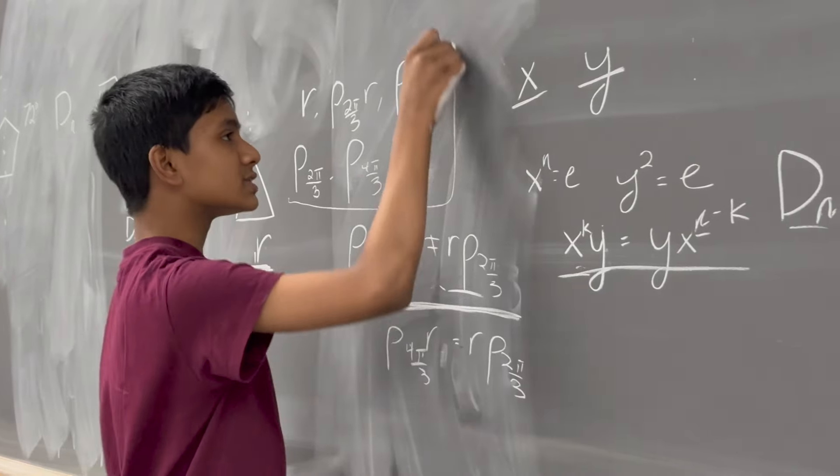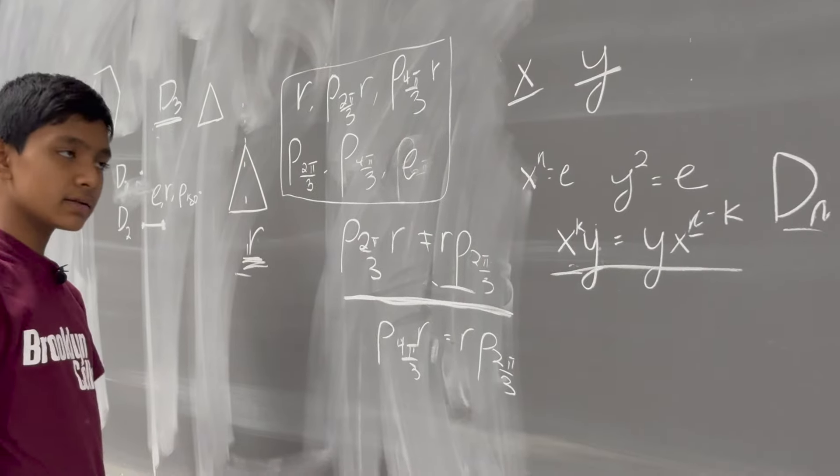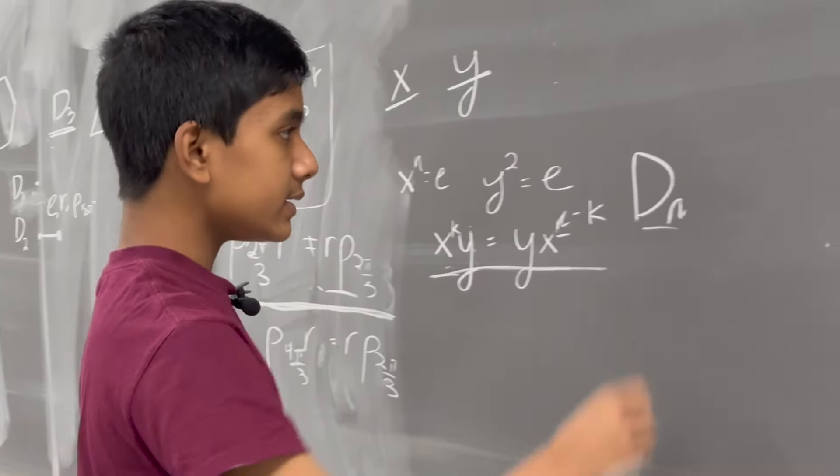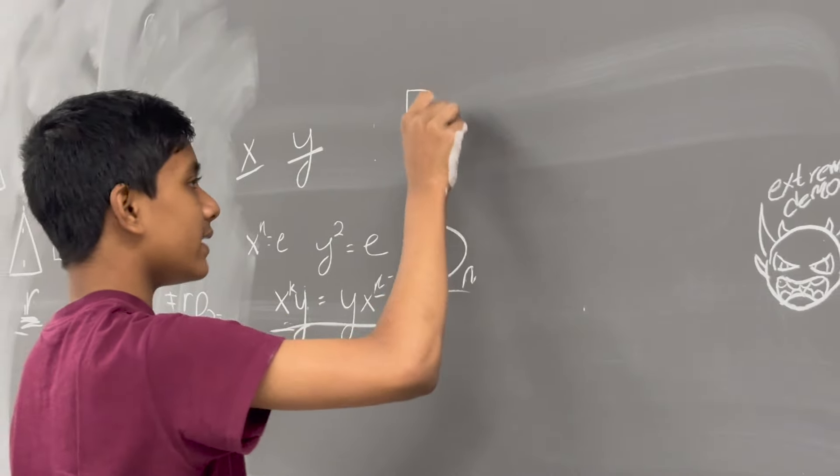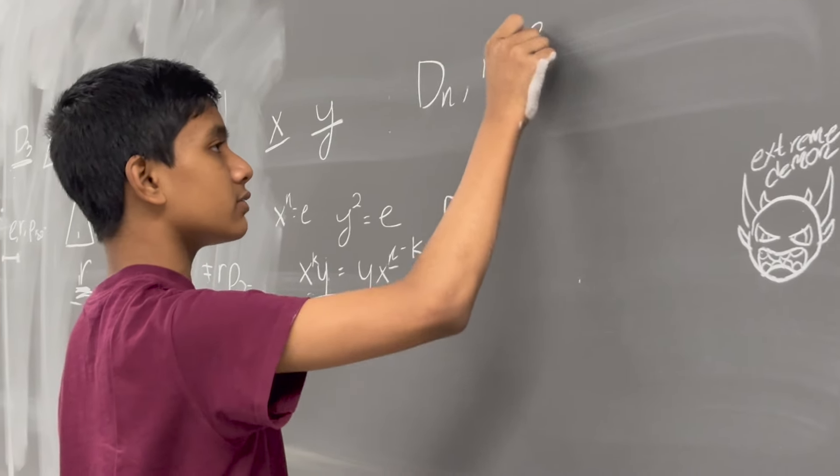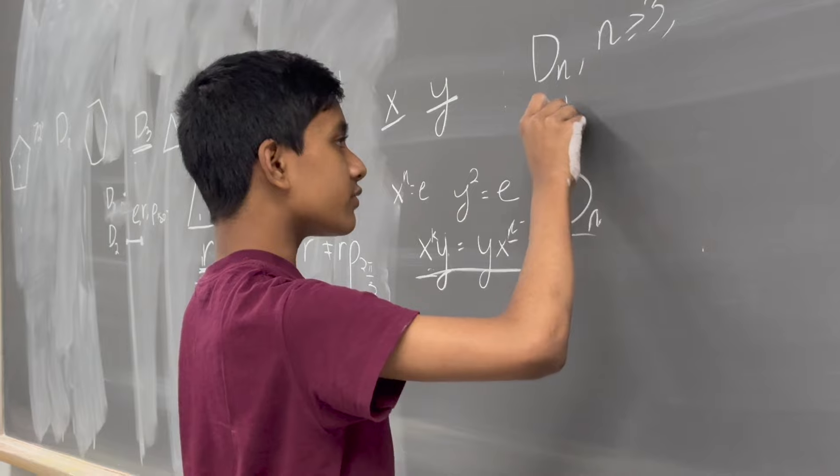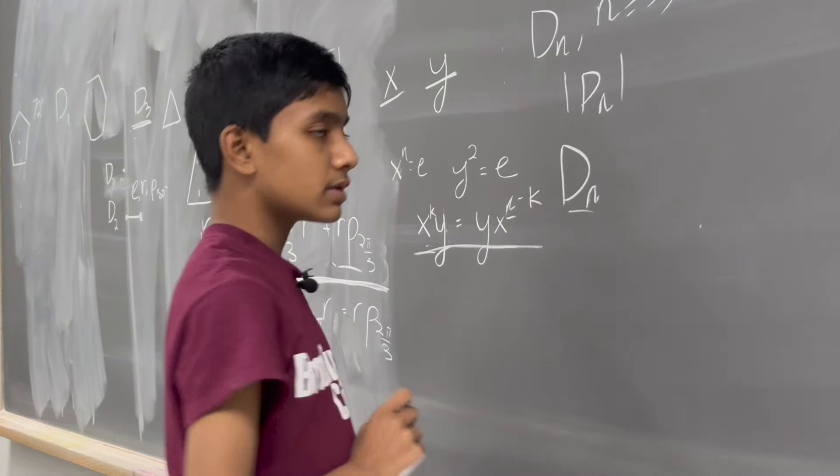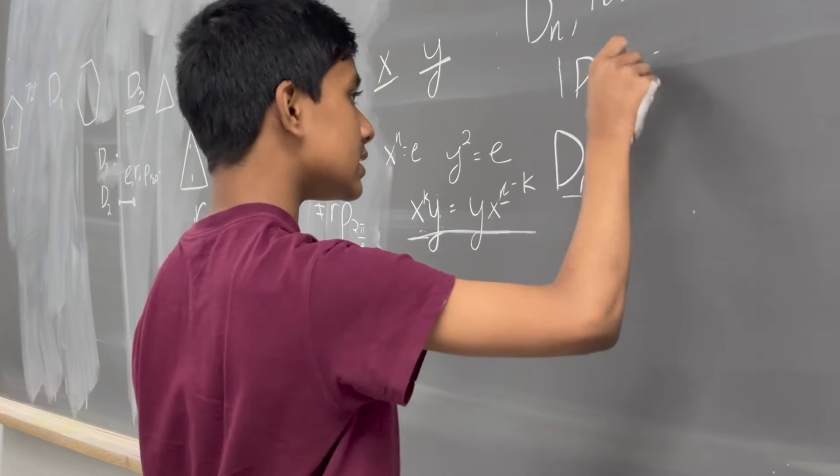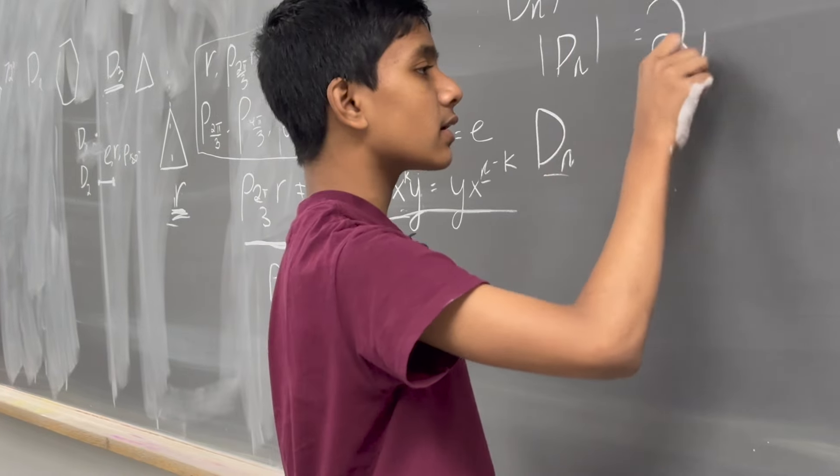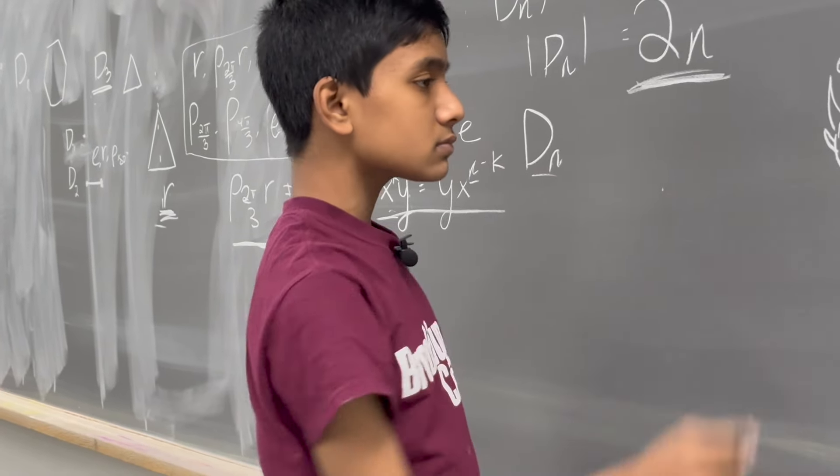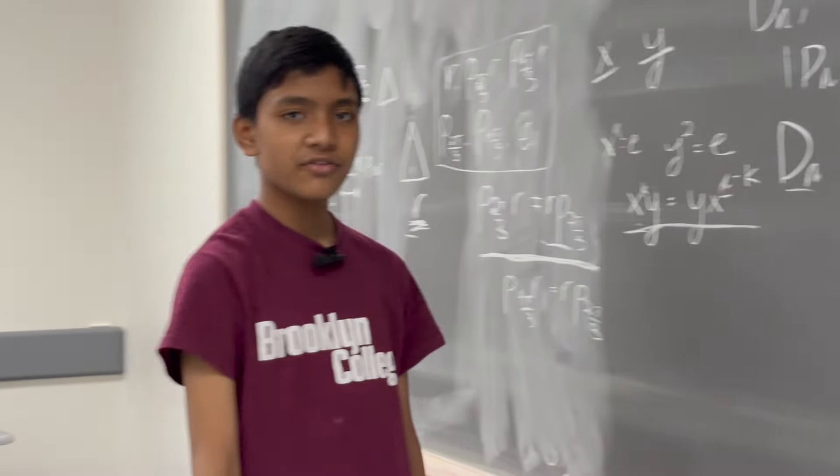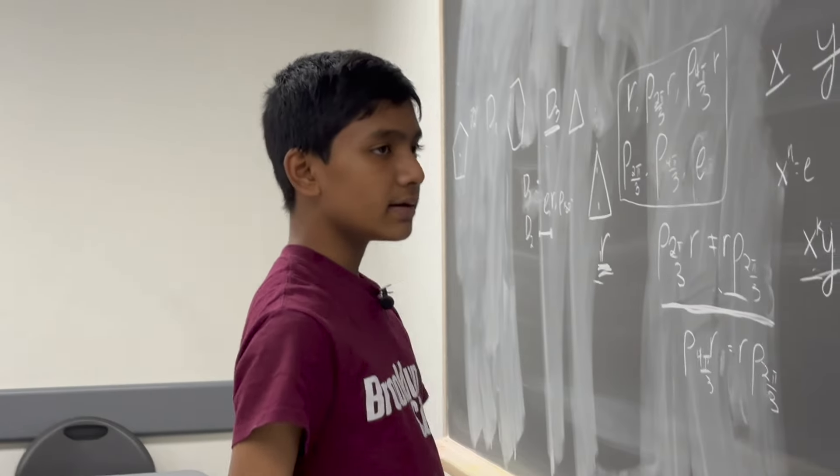So, these are 6 elements. And, the fun pattern that you'll find is, for D N, N greater than or equal to 3, the order of D N, the number of elements, is just equal to 2 times N. So, that's pretty fun.